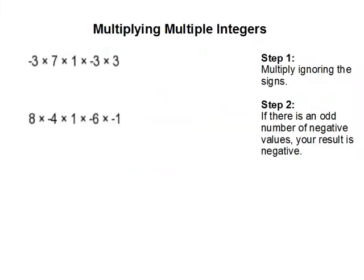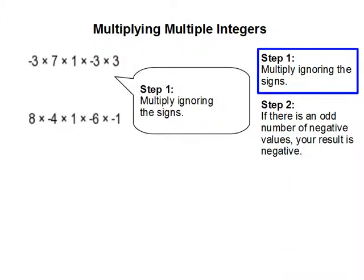Multiplying multiple integers. In this problem, we are going to multiply a set of integers. Step 1: Multiply ignoring the signs.